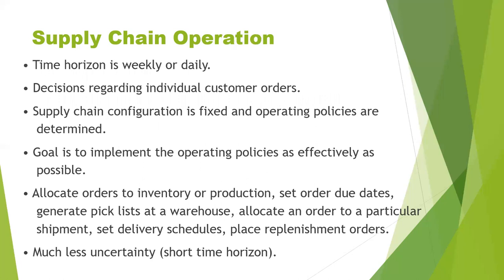The next phase is Supply Chain Operation. The time horizon here is weekly or daily. During this phase, companies make decisions regarding individual customer orders. At the operational level, supply chain configuration is considered fixed and planning policies are already defined. The goal of supply chain operation is to handle incoming customer orders in the best possible manner. During this phase, firms allocate inventory or production to individual orders, set a date that an order is to be filled, generate pick lists at a warehouse, allocate an order to a particular shipping mode and shipment, set delivery schedules of trucks, and place replenishment orders.